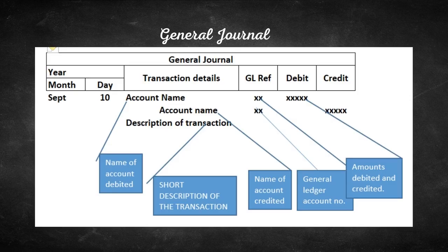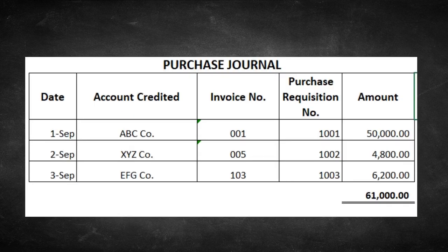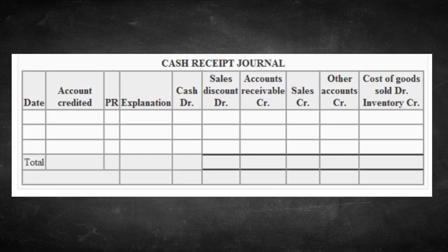In order to reduce the amount of writing in a general journal, special journals or daybooks were introduced. The special or specialized journals consisted of the sales journal, purchase journal, and the cash receipt journal. The company's transactions were written in the journals in date order.